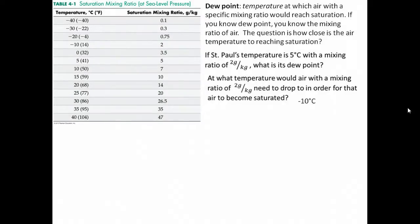Essentially, what we're saying is: if you drop the temperature of the air from 5 degrees Celsius down to minus 10 degrees Celsius, that amount of water would saturate the air, because you decrease the capacity of air to hold water.